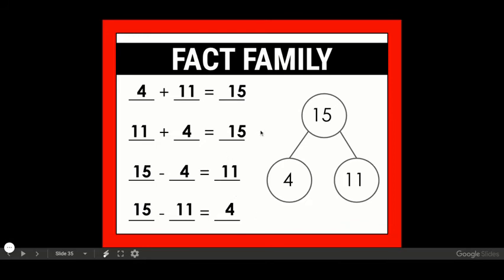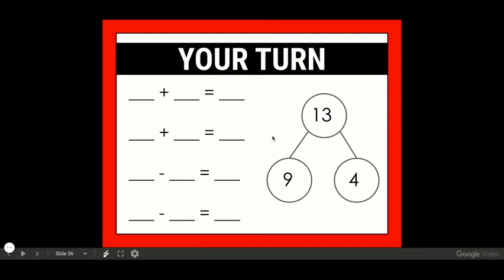Are you ready to try one on your own? Here's your number bond. You have 13 for your whole and 9 and 4 for your two parts. Go ahead and pause the video and write your two addition problems and your two subtraction problems. When you're ready, play the video again.